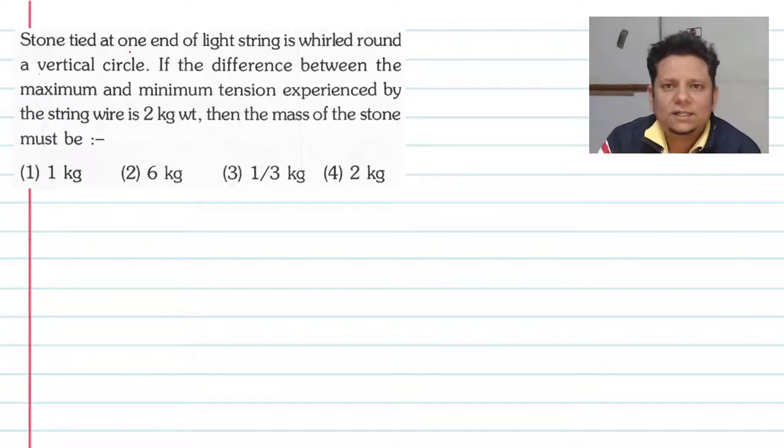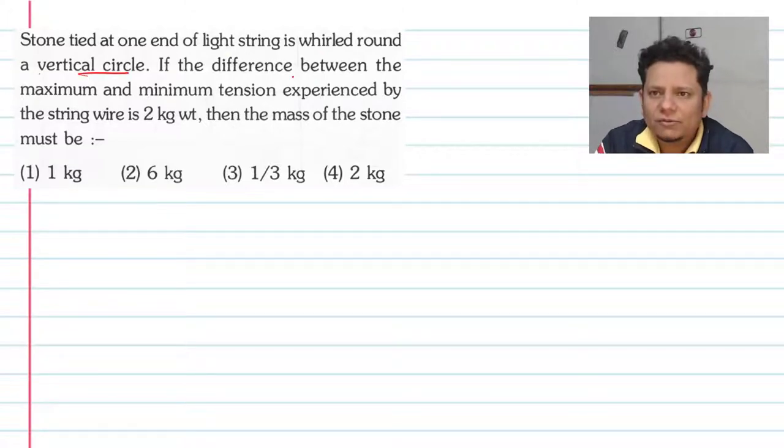Next question: A stone tied at one end of a light string is whirled around in a vertical circle. If the difference between the maximum and minimum tension experienced by the string wire is 2 kg weight, then the mass of the stone must be? Our options are 1 kg, 6 kg, 1/3 kg, or 2 kg.